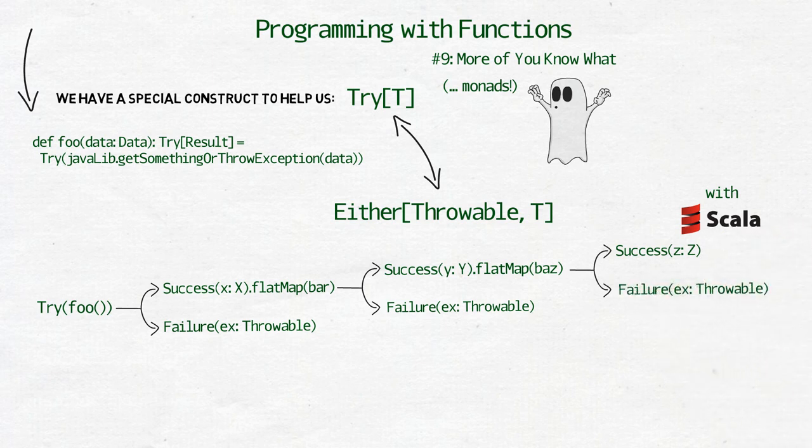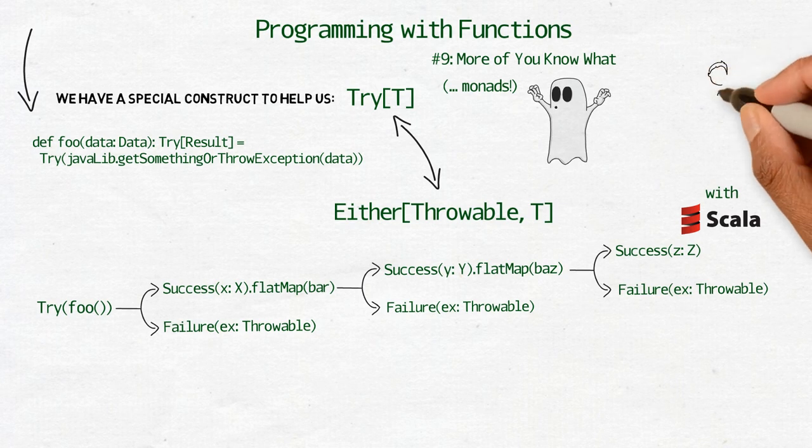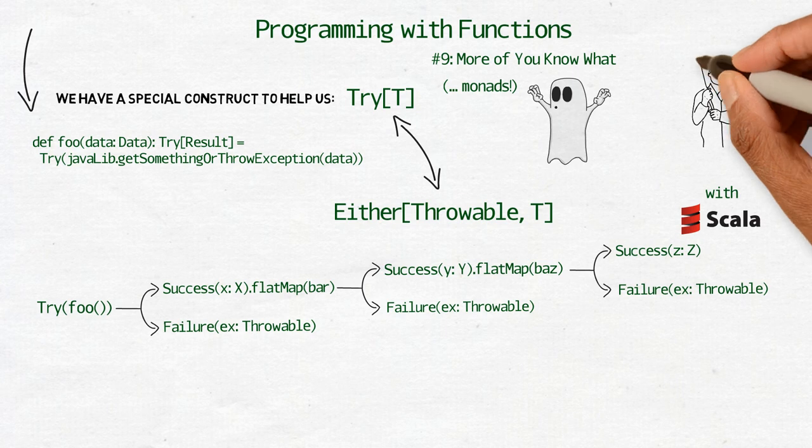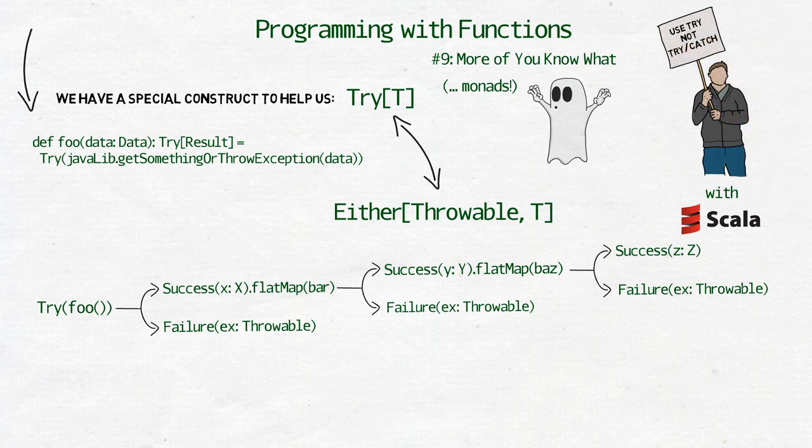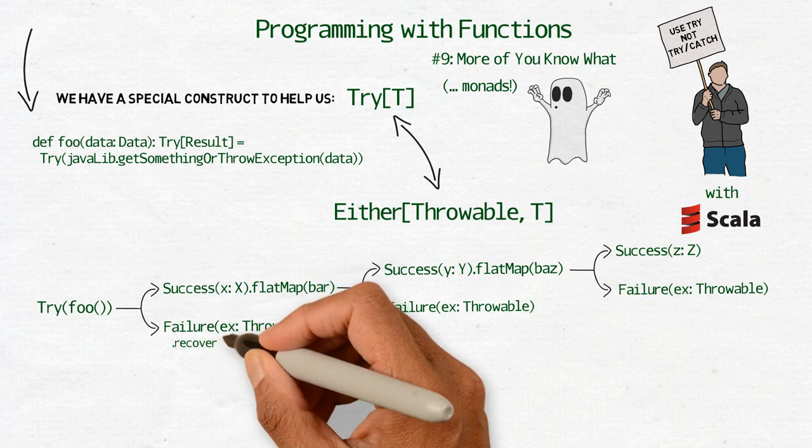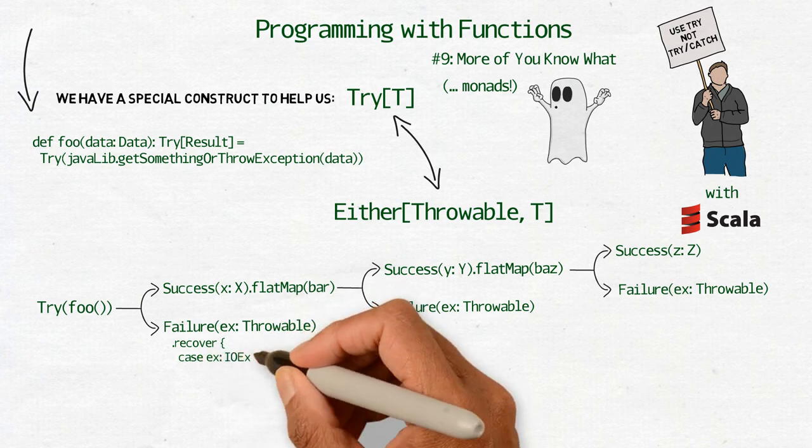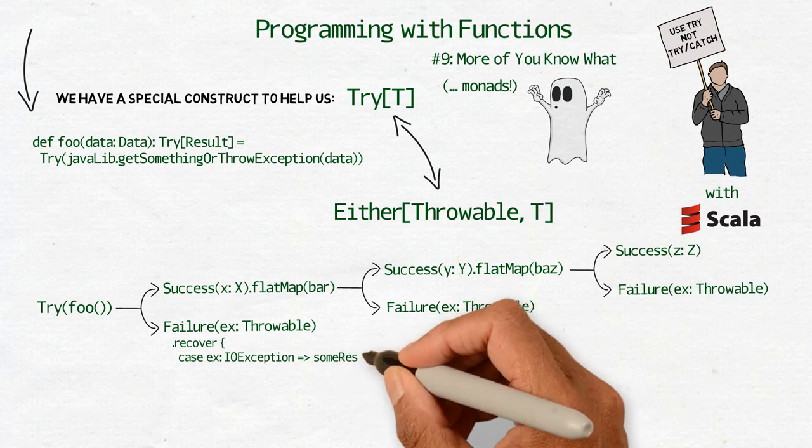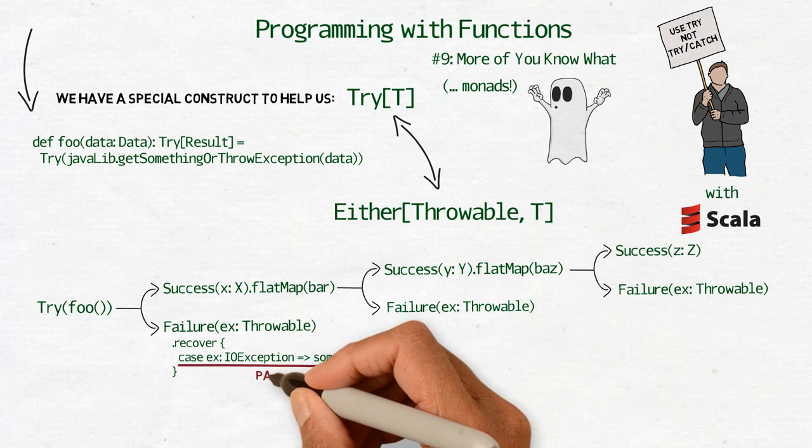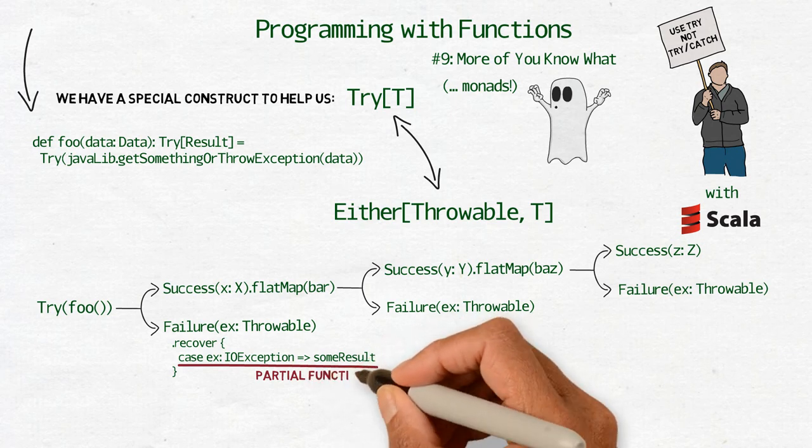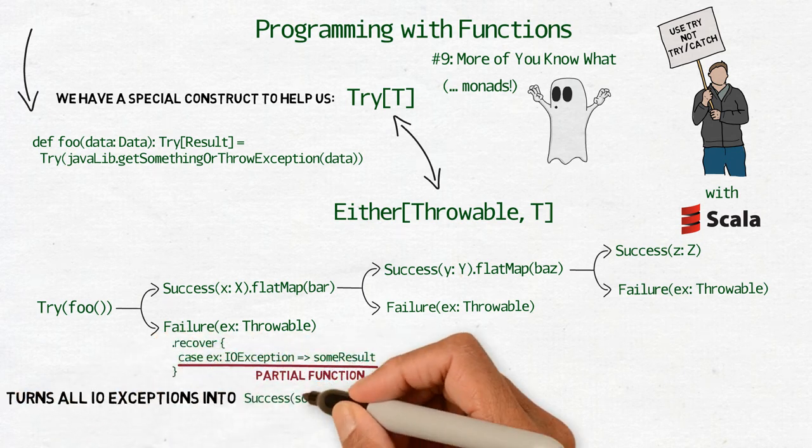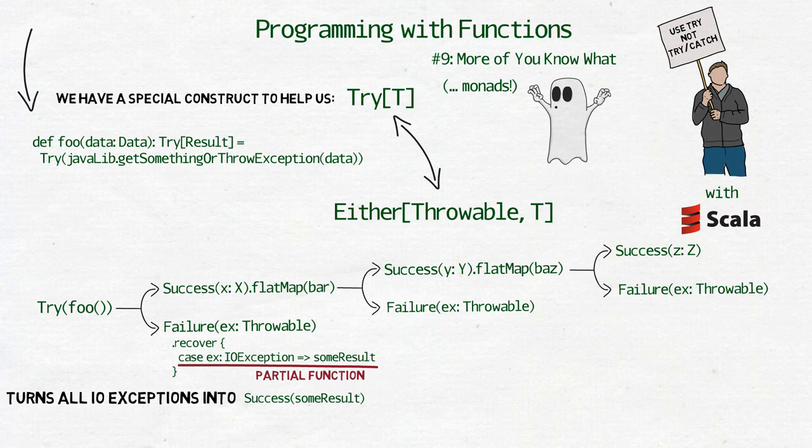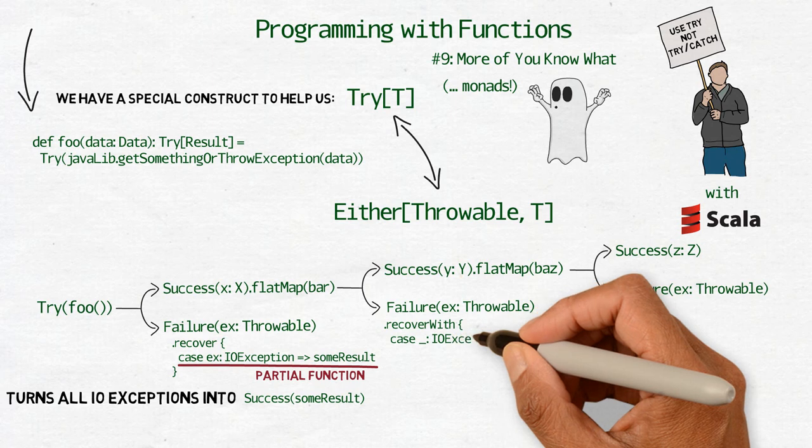All those methods work under the condition that the result of the original computation is successful. If the computation ends up throwing an exception, they will do nothing. In that case, we can get help from two other methods: recover and recoverWith. They both replace the catch clause in try-catch, but they both work a bit differently. Use recover when you are sure that for some exceptions your code should return a successful result. Recover takes a partial function as its argument. That partial function should produce a result which recover will wrap in a success.